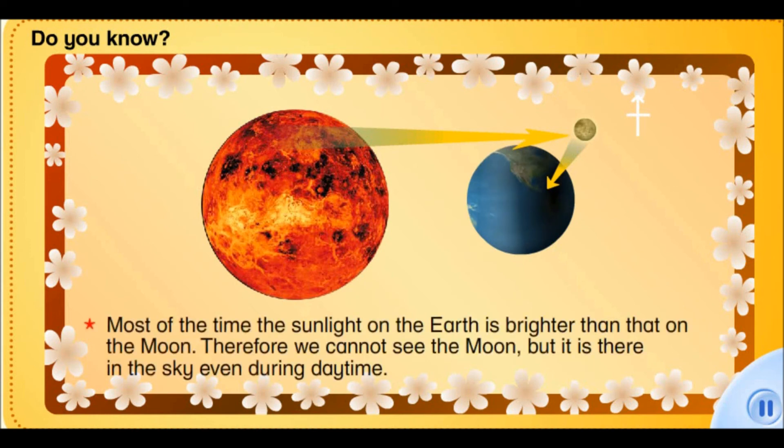Most of the time, the sunlight on the Earth is brighter than that on the Moon. Therefore, we cannot see the Moon, but it is there in the sky even during daytime.